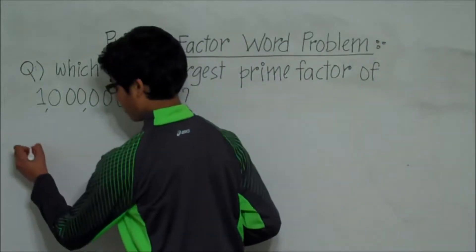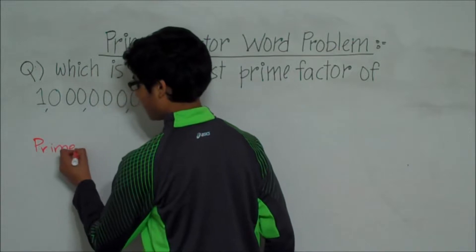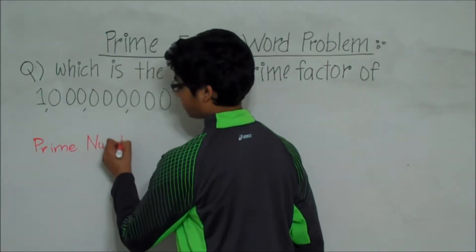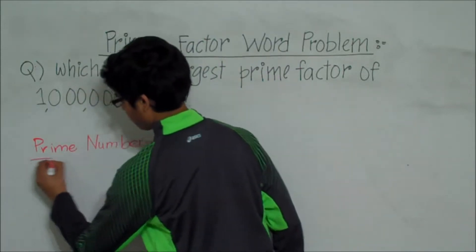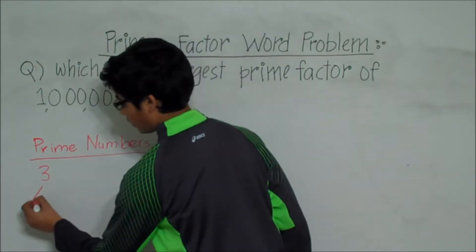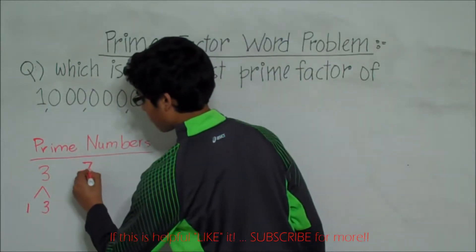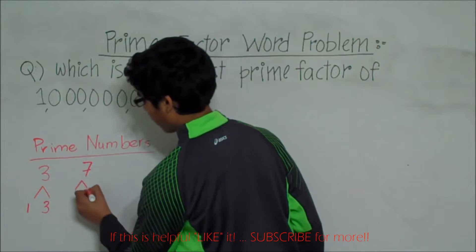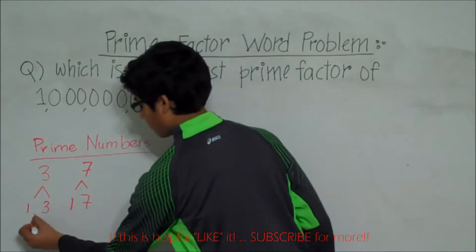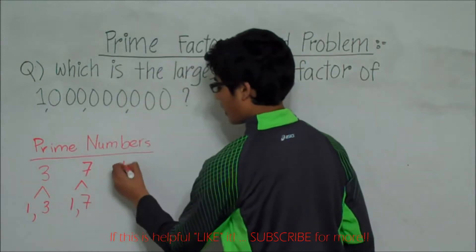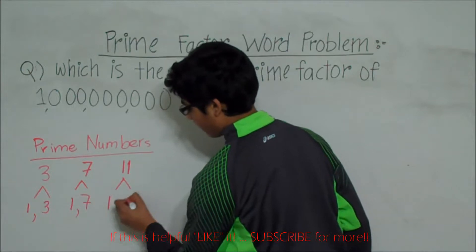Some examples of prime numbers are 3, which has only the factors of 1 and 3, 7, which has only the factors of 1 and 7, or 11, which has only the factors of 1 and 11.